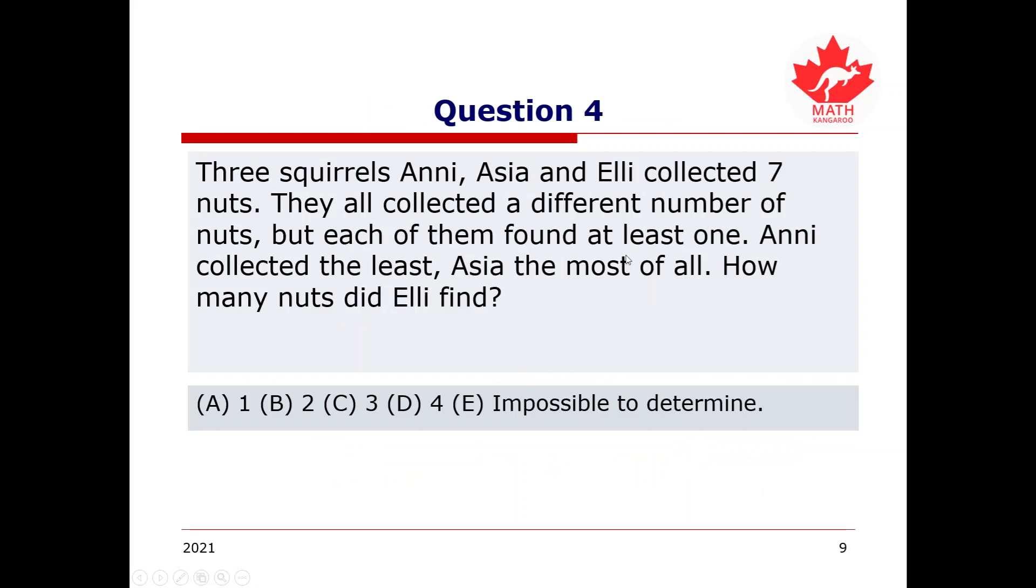All right. So, for question four, it states that we have three squirrels, Annie, Asia, and Ellie, that collected seven nuts. They all collected a different number of nuts, but each of them found at least one. Annie collected the least, Asia the most of all. How many nuts did Ellie find? Then pause the video and try to work out the answer. All right. I hope you found the answer. Let's check it out.